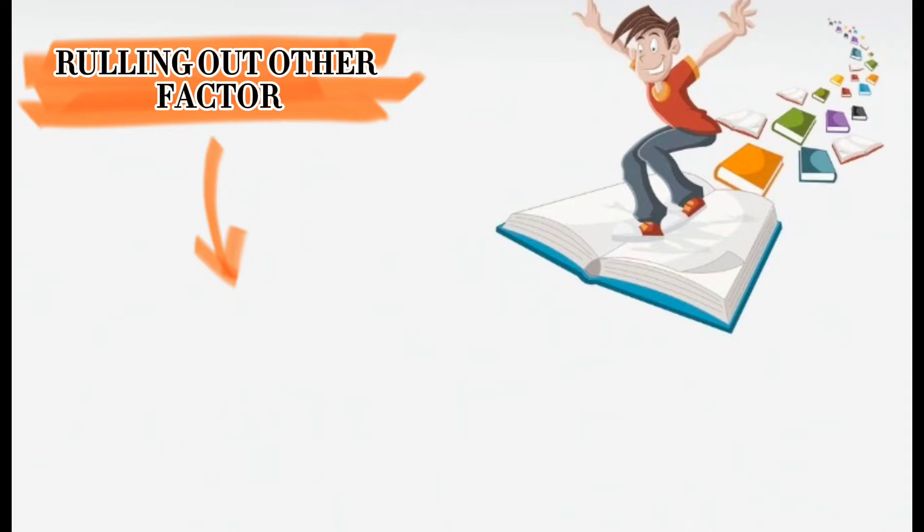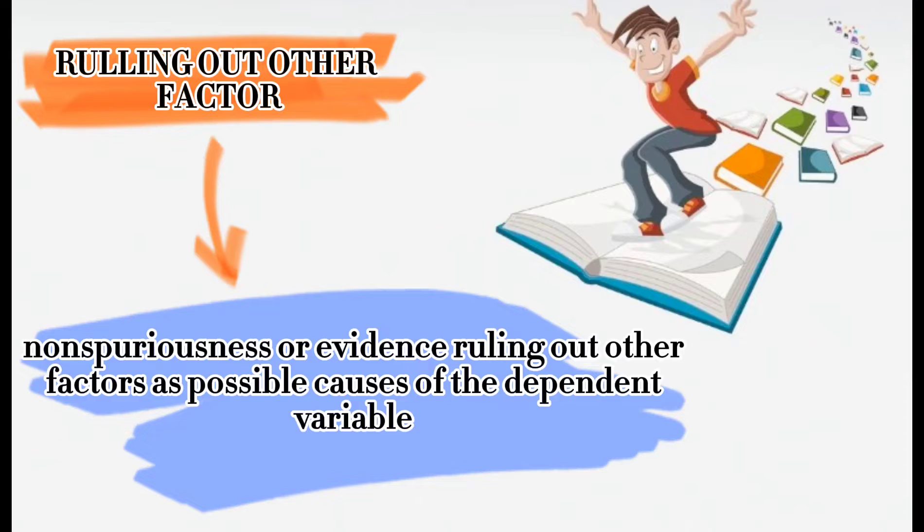The third basis for inferring a causal relationship is non-spuriousness or evidence ruling out other factors as possible causes of the dependent variable. However, such evidence merely helps to provide a reasonable foundation for inferring that x is or is not a cause of y.